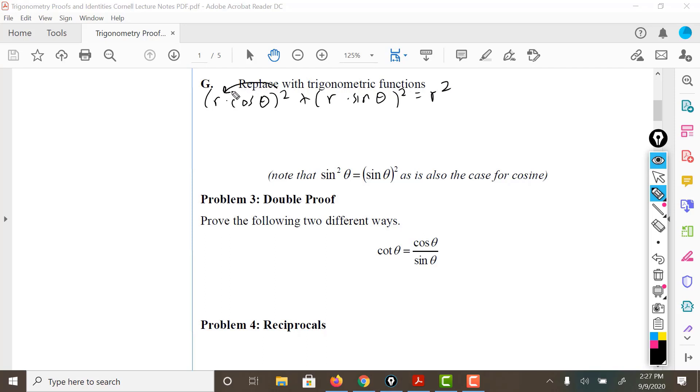If I distribute this, they both get it. I get R squared times cosine theta plus R squared times sine squared theta is equal to R squared. Notice,